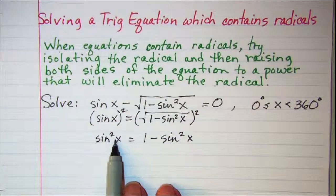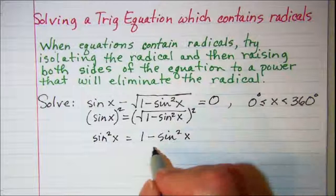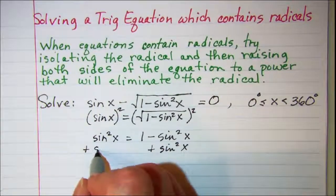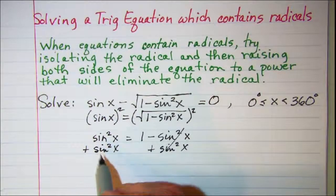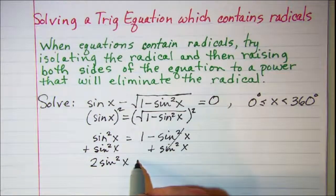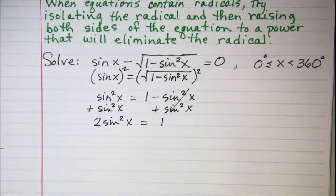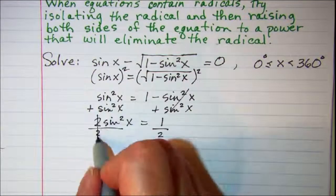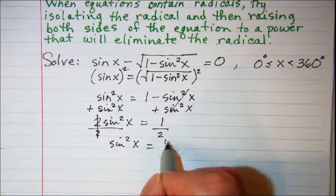We have a sin squared on the left and a negative sin squared on the right. Let's add sin squared x to both sides. These will cancel, and now I have 2 sin squared x on the left and 1 on the right. Dividing both sides by 2 gives sin squared x equals 1 half.